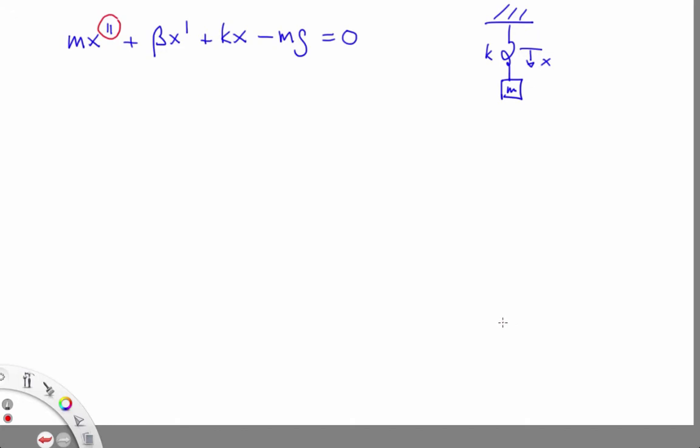The first step in this procedure is to get that highest-order derivative term by itself on the left-hand side of the equation, like this. The second step is to define a helper variable, like this.